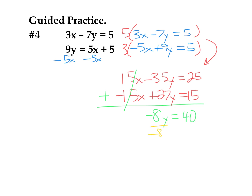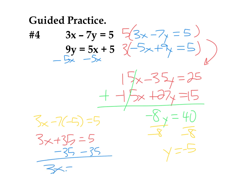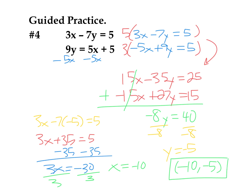Dividing by negative 8 on both sides, I get y equals negative 5. I'll plug that into the first original equation: 3x minus 7 times negative 5 equals 5. That's 3x plus 35 equals 5. Subtracting 35 on both sides gives 3x equals negative 30. Dividing by 3 on both sides gives x equals negative 10. So my final answer is the ordered pair negative 10 comma negative 5. You could plug those into the two original equations to verify they both solve.